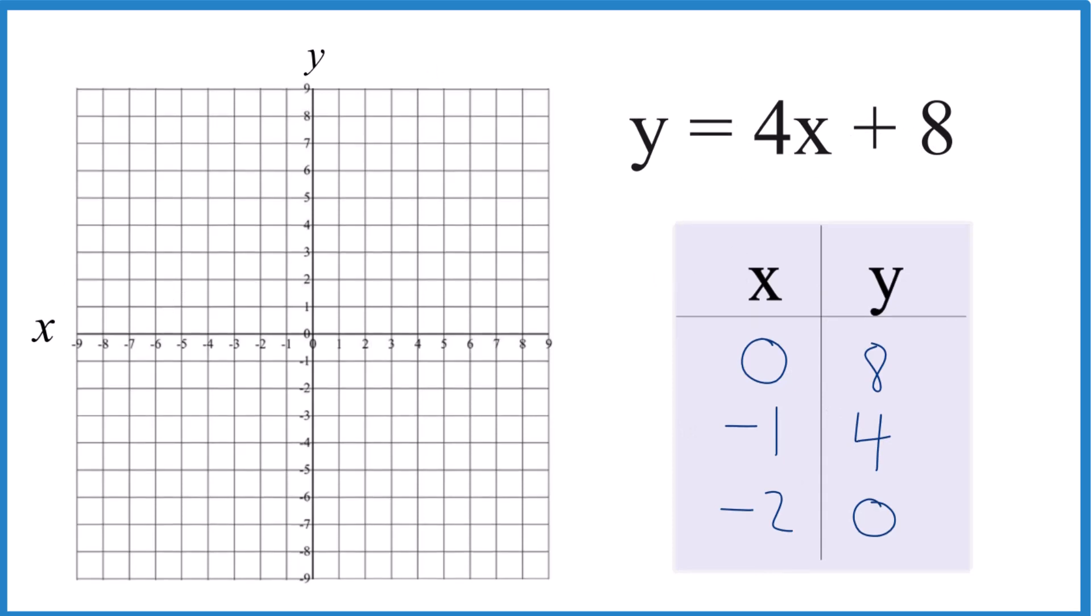So if we have x is 0, y is 8. x is 0, y is 8, right there. x is negative 1, y is 4, and it's always nice to have three points.